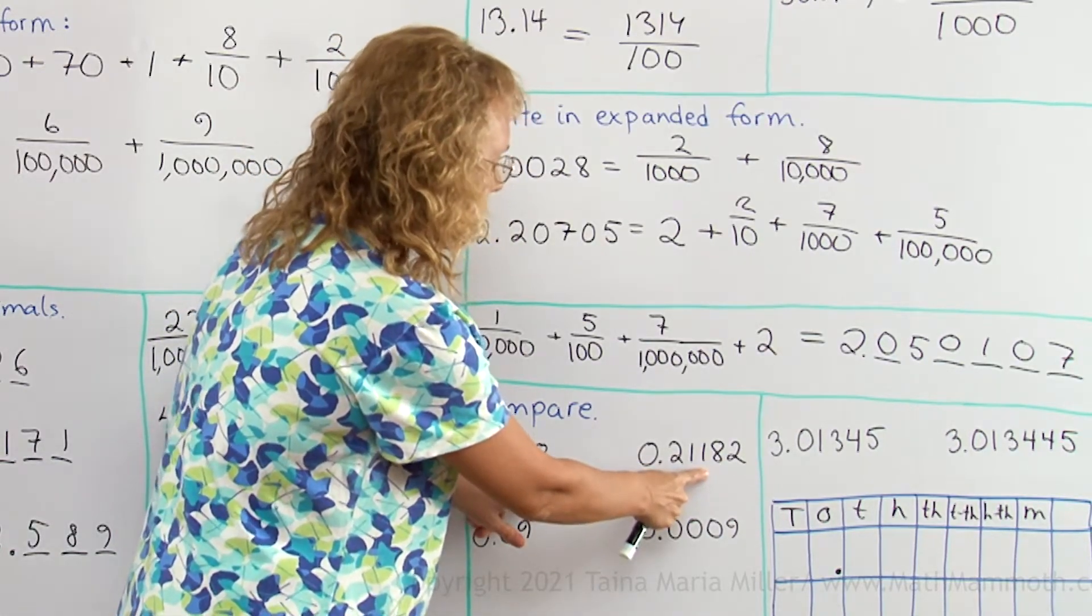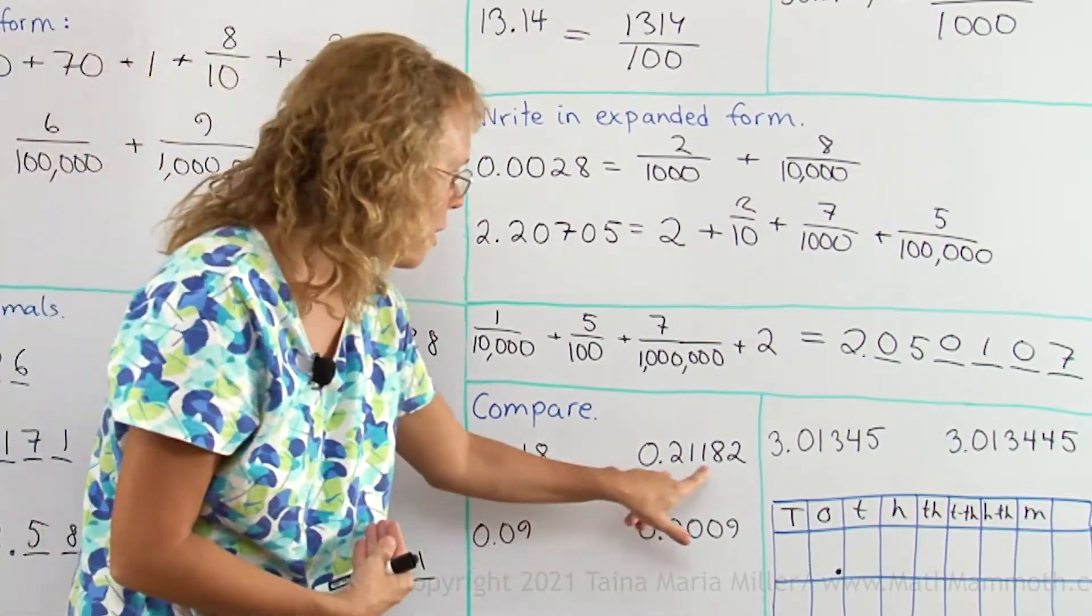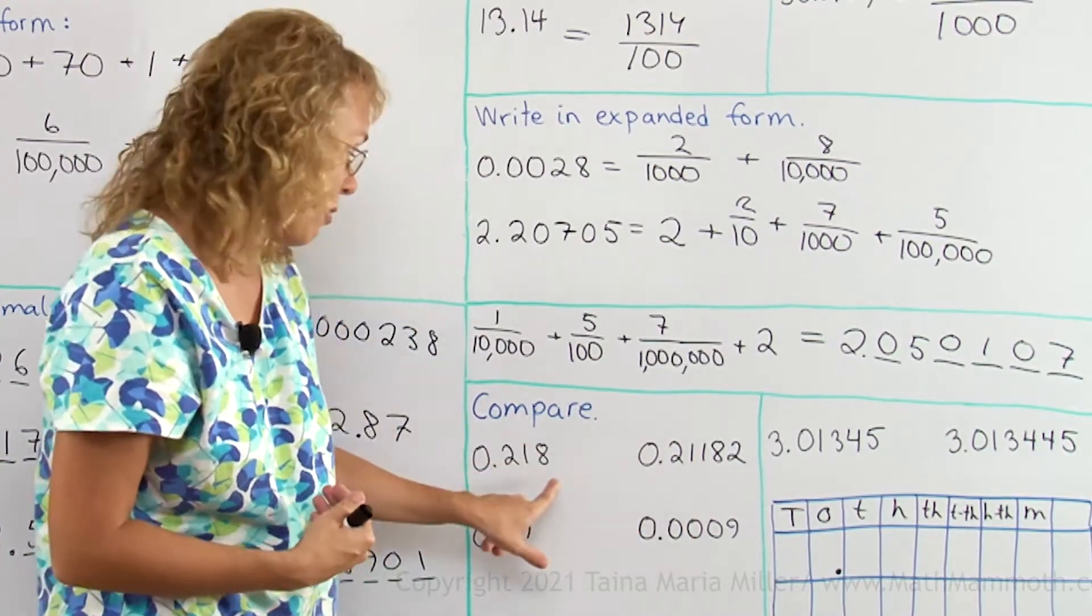But here's the difference, it's in the thousandths place. This number has eight thousandths, this number has just one. So therefore this is more.